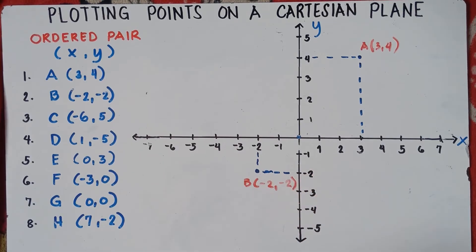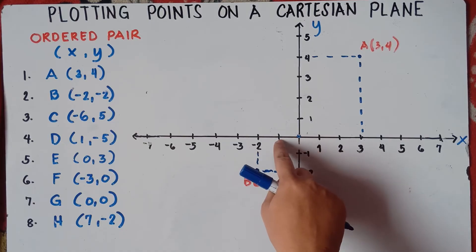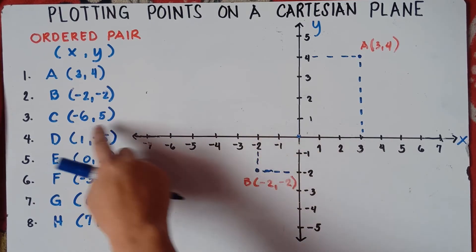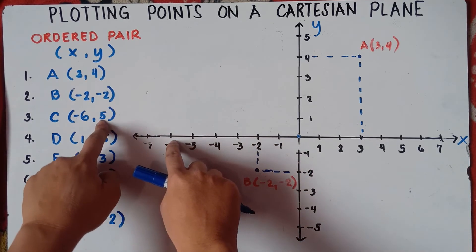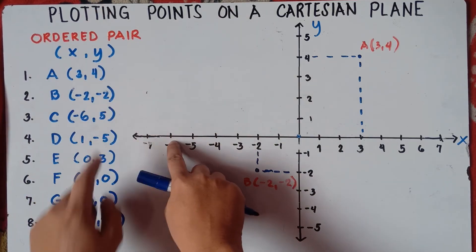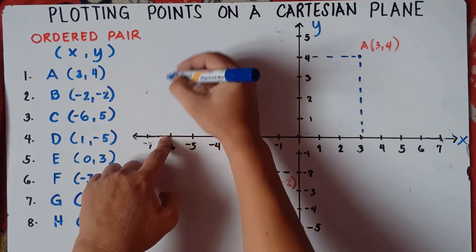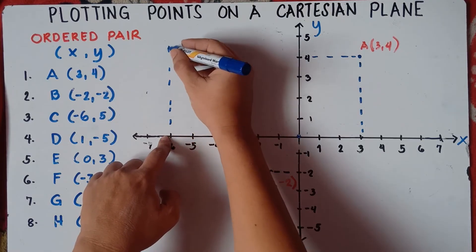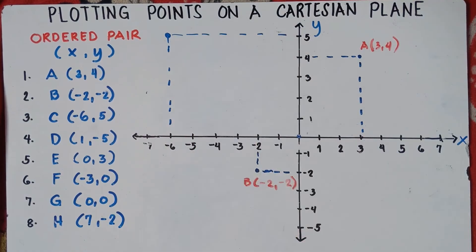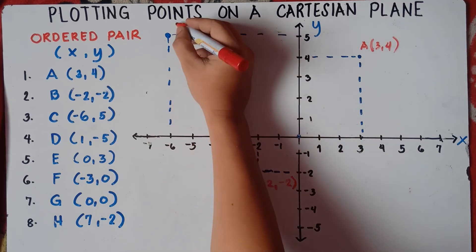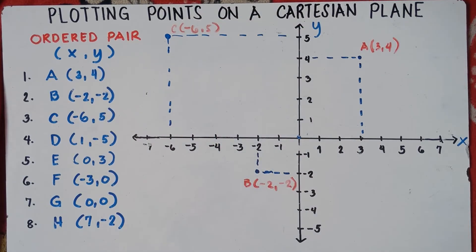For point C, x is negative 6. Starting from the origin, move 6 units to the left — 1, 2, 3, 4, 5, 6. Then y is positive 5, so move 5 units upward — 1, 2, 3, 4, 5. Add broken lines to guide you, and label the point: C is (-6, 5).